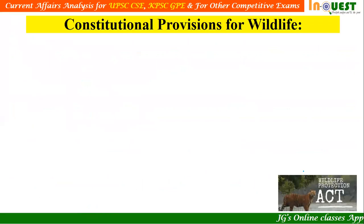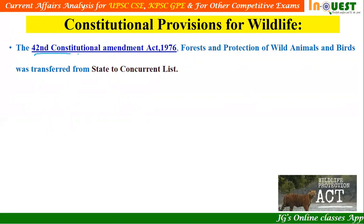Let us understand the constitutional provisions for wildlife. We need to understand one amendment and two articles: the 42nd Amendment and Articles 51A and 48A. According to the 42nd Constitutional Amendment Act 1976, any matters related to forest and protection of wild animals and birds, which were previously in the state list, were moved to the concurrent list.